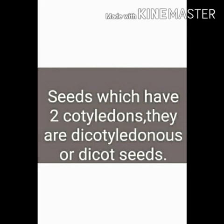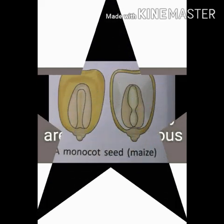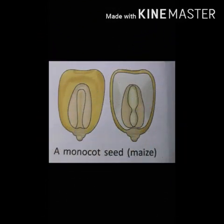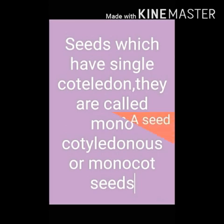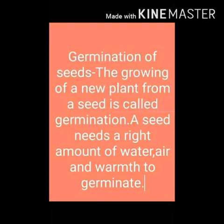Seeds like bean, rajma, pea, and gram have two cotyledons. They are called dicotyledonous or dicot seeds. Some seeds like rice, wheat, maize, oat, and barley have a single cotyledon. They are called monocotyledonous or monocot seeds.